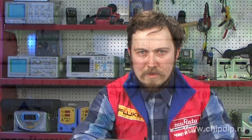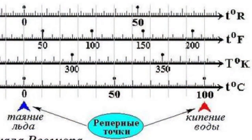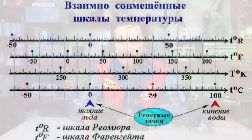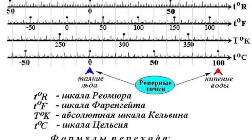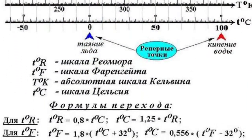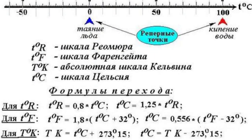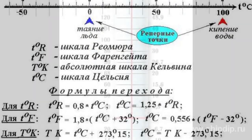The widest practical application has been gained by the Celsius scale, in which the freezing point of water is set to zero, and 100 degrees is the boiling point of water at atmospheric pressure. The Celsius scale is very convenient in practice, as water is very common on our planet and is the basis of our life. Another advantage of this scale is the equality of degrees Celsius and Kelvin degrees, so we can easily switch from one scale to the other.